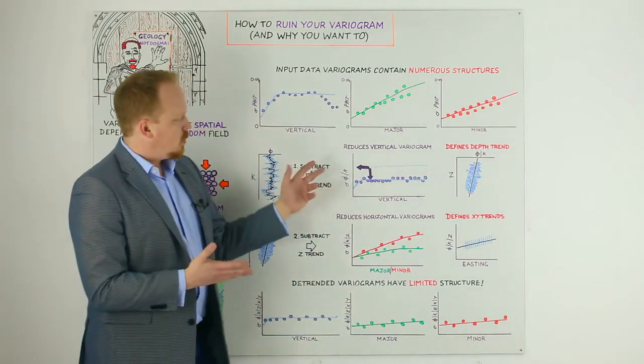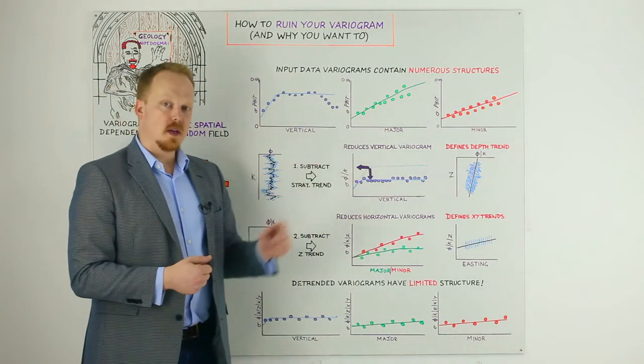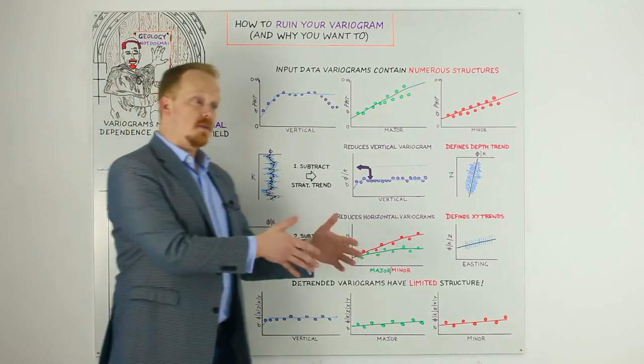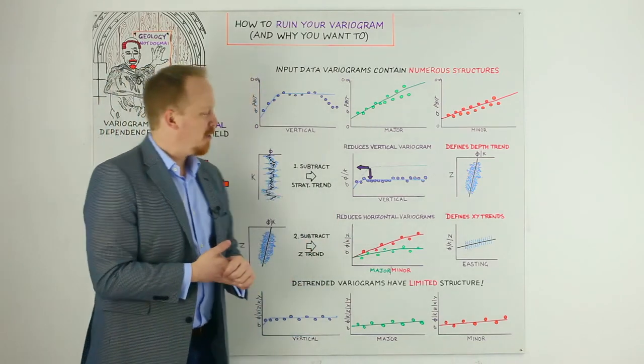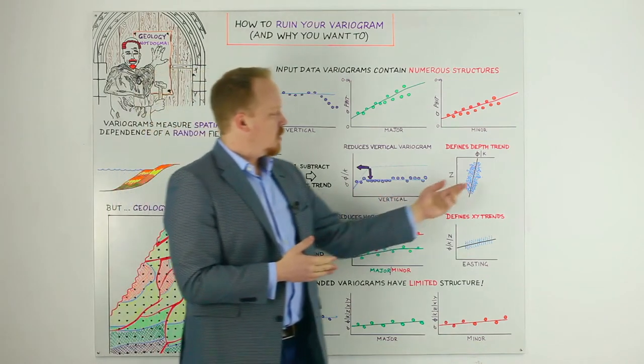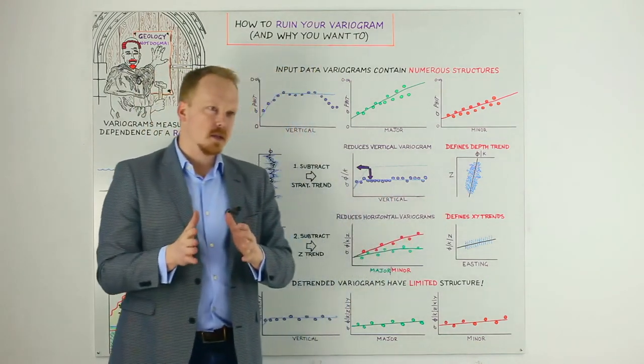Once we take that trend out, we'll have a new property. It'll be porosity given that trend. And we can do a trend analysis on that property. So now we're doing it against depth. And what's interesting is, as you take out trends progressively,